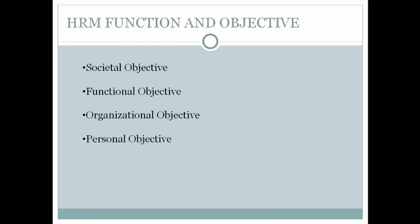The second is organizational objectives: to determine the role of HRM in organizational effectiveness, to assist sub-organizations, with the HR department also serving other departments. Third is functional objectives: to maintain department contribution in organizational effectiveness, ensuring HR department services fit the organizational objectives. Finally, personal objectives are to assist employees in achieving their personal and individual goals, maximizing their contribution to the organization. Personal objectives are achieved when employees are satisfied, motivated and retained, leading to excellent service and excellent organizational performance.